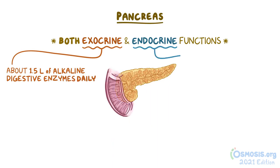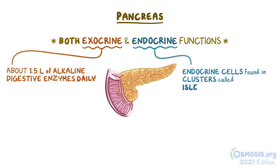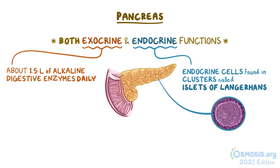The pancreas also contains small endocrine cells found in clusters called islets of Langerhans, which typically stain lighter than the pancreatic tissue around them.